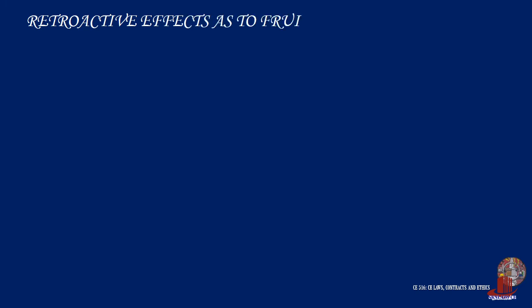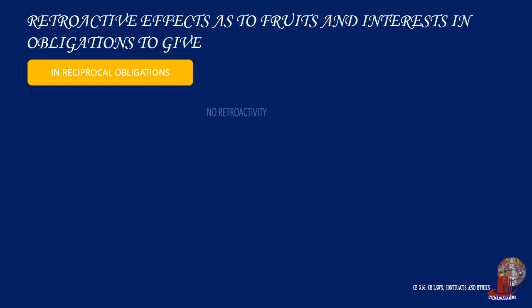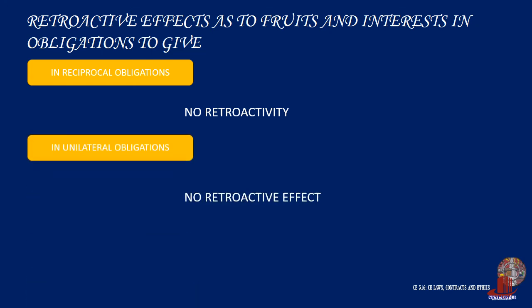Moreover, what are the retroactive effects as to fruits and interest in obligations to give? First, in reciprocal obligations, there is no retroactivity because the fruits and interest received during dependency of the condition are deemed to have been mutually compensated. This rule is necessary for purposes of convenience since the parties would not have to render mutual accounting of what they have received. Fruits here may be natural, industrial, or civil fruits. In unilateral obligations, there is usually no retroactive effect because they are gratuitous. The debtor receives nothing from the creditor. Thus, fruits and interest belong to the debtor unless, from the nature and other circumstances of the obligation, it should be inferred that the intention of the person constituting the same was different.